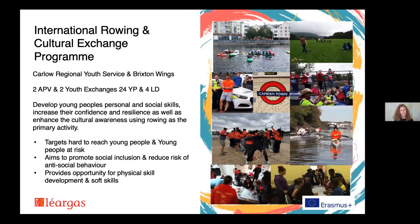Carlo is based in a rural community in Ireland right by a river with a lot of rowing activity. Brixton Wings similarly engages young people in a lower socioeconomic community with many anti-social issues through outdoor activities, including rowing. The overall project idea was to develop young people's personal and social skills, increase their confidence and resilience. The young people involved were 'hard to reach' — at risk of early school leaving or risky behaviors.